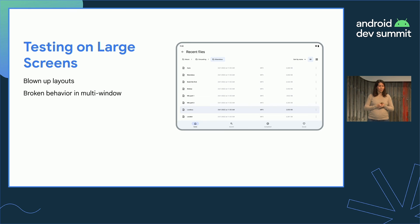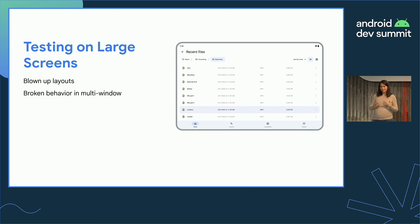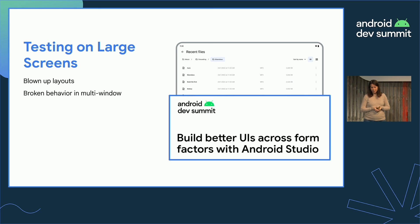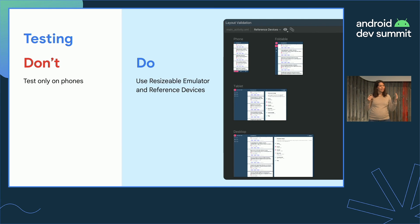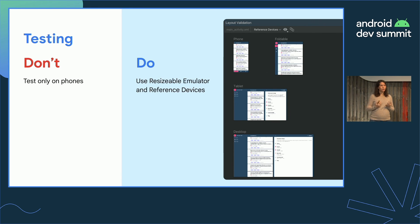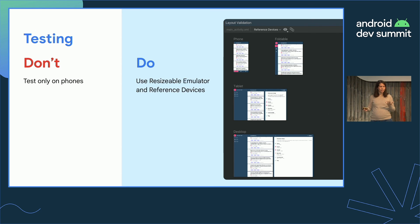Many apps are clearly not tested on large screens — we see blown-up layouts and broken behavior in multi-window. All of these can be easily diagnosed using the resizable emulator, which lets you test your app in different screen sizes quickly, including multi-window. Also use reference devices while developing, as they allow you to quickly see how your app looks across the device ecosystem. Check out the dedicated tools talk for more detail.